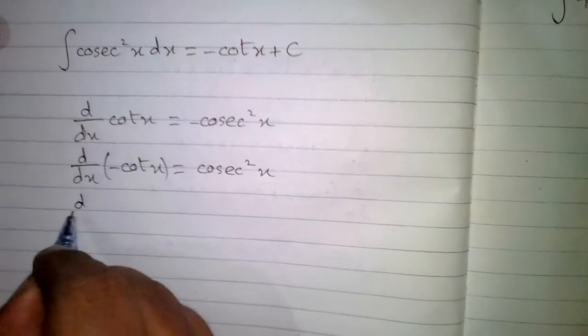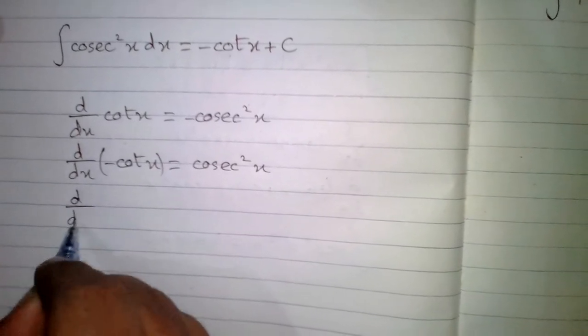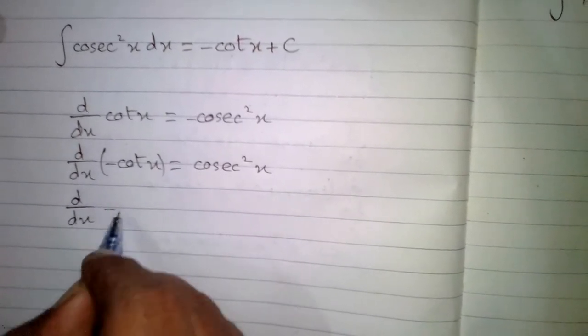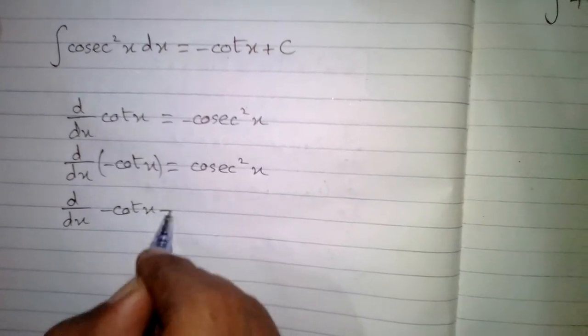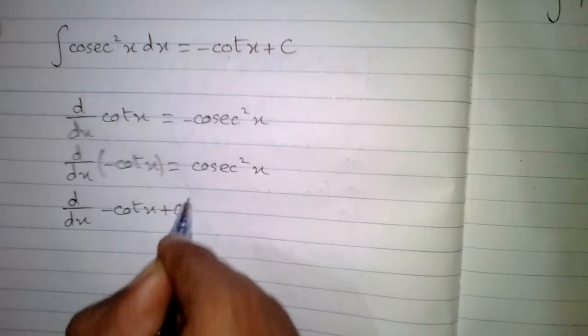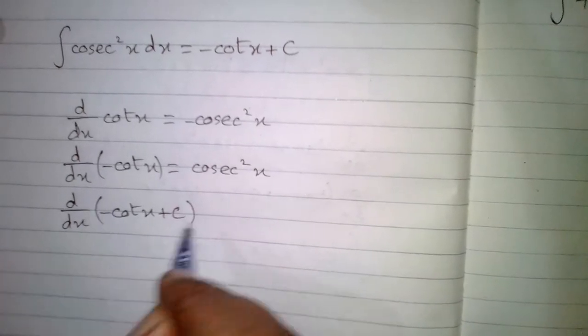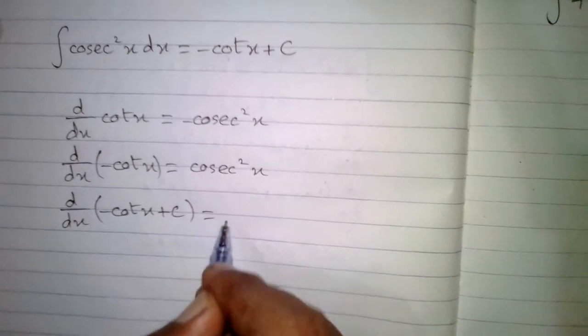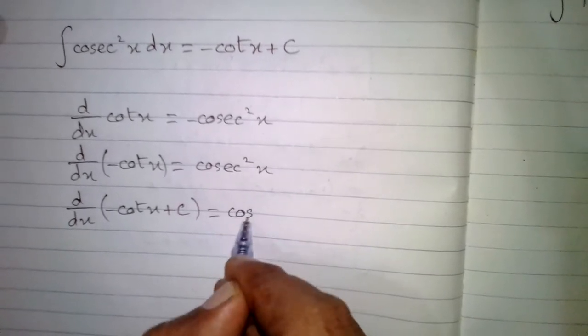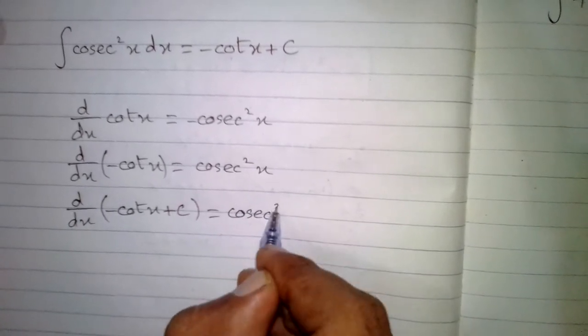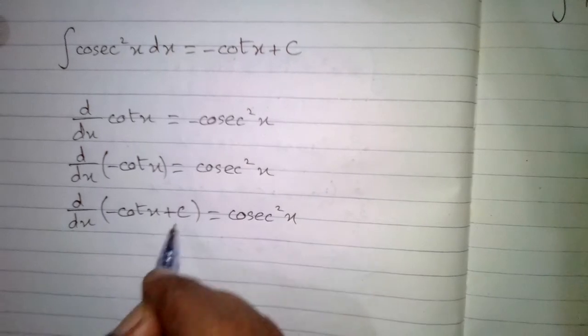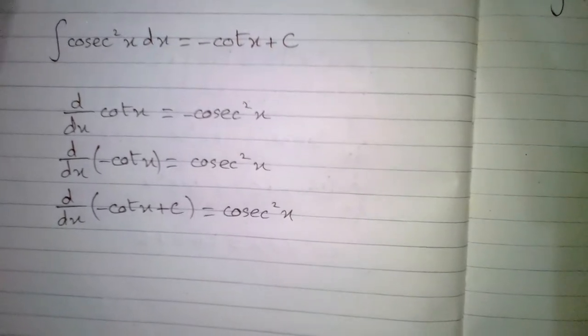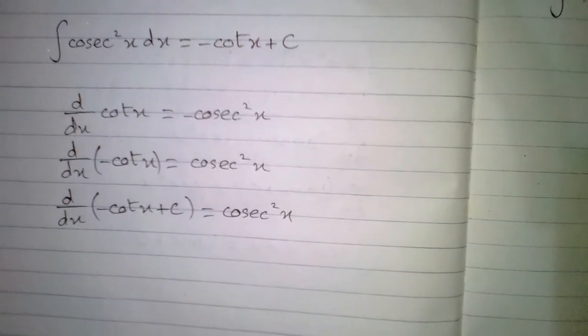And if we add some constant to minus cot x, then the derivative of minus cot x plus c is cosec square x, because the derivative of a constant is 0.